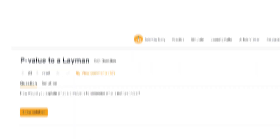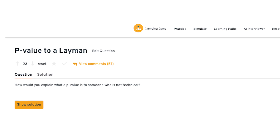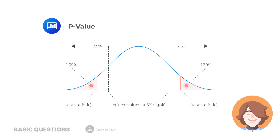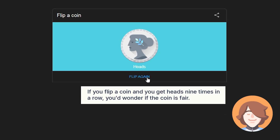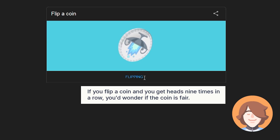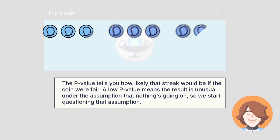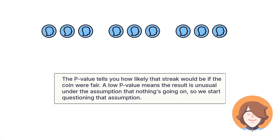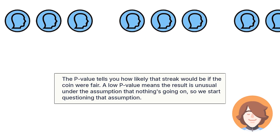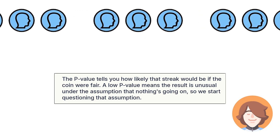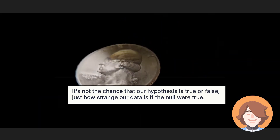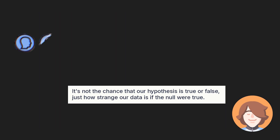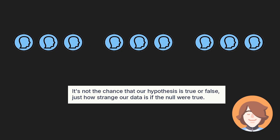The last basic question is: how would you explain a p-value to a non-technical person? A p-value helps us understand how surprising our data is if there's actually no real effect. Think about it like this: if you flip a coin and get heads nine times in a row, you'd wonder if the coin is fair. The p-value tells you how likely that streak would be if the coin were fair. A low p-value means the result is unusual under the assumption that nothing's going on, so we start questioning that assumption. It's not the chance that our hypothesis is true or false — just how strange our data is if the null were true.